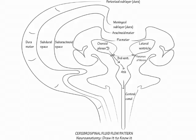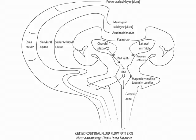Show fluid empty from the fourth ventricle through the foramen of Magendie in midline, and the foramen of Luschka laterally to enter the subarachnoid space. Draw it flow into the spinal canal to bathe the spinal cord, and also rostrally into the cranial vault to bathe the rest of the brain.